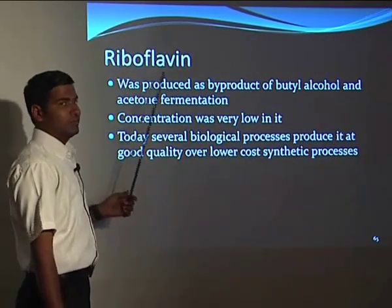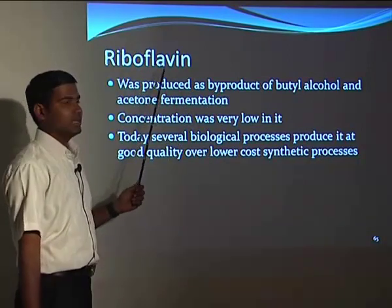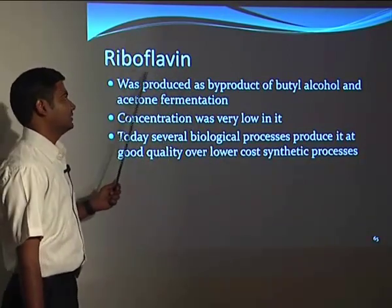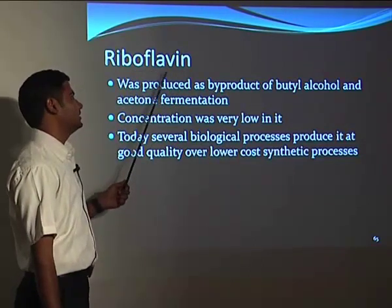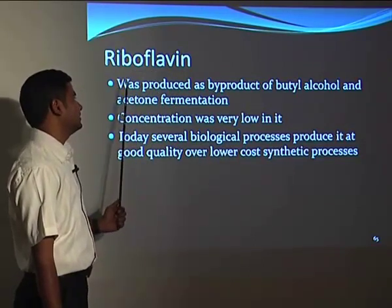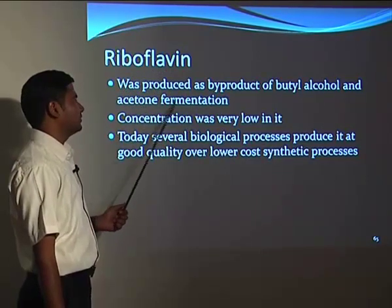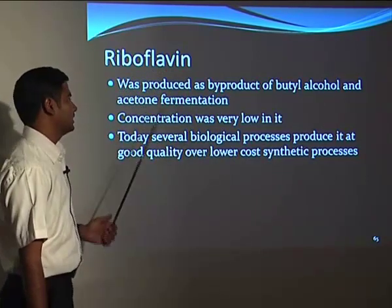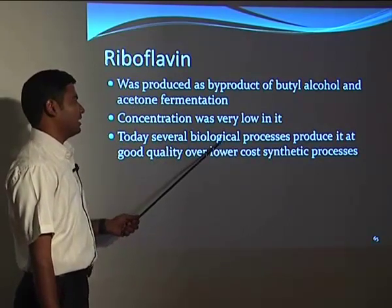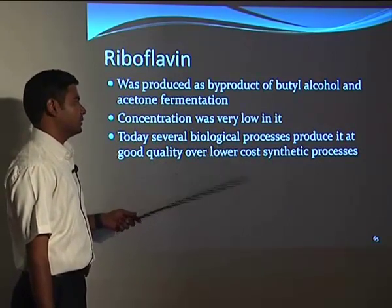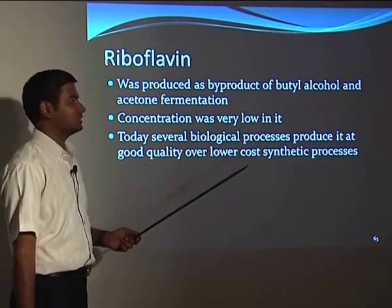Riboflavin is one of the nutrients needed and is also useful for stabilization of the B-complex vitamins. It was produced as a byproduct of butyl alcohol and acetone fermentation, but the concentration was very low. Today, several biological processes produce it at good quality and lower cost than synthetic processes.